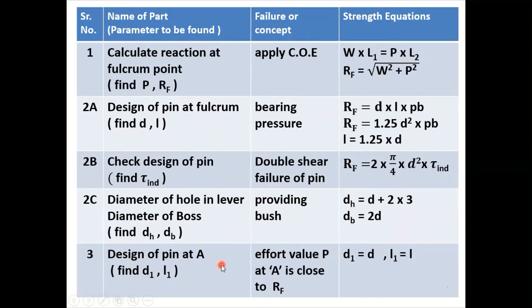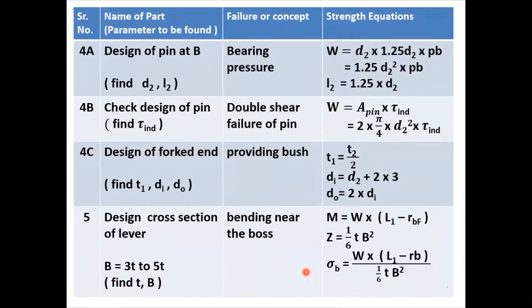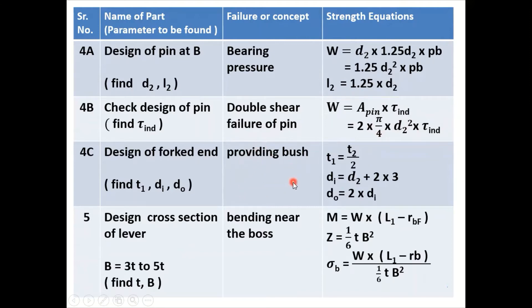Step 3 is design of pin at effort point. If the value of P is close to Rf, then the same pin dimensions will be used. Step 4 is similar to step 2 but for the pin at the load point. The load point value is W, so use the bearing pressure equation to find d2 and L2, then check the pin for double shear failure, and find the dimensions of the forged end of the lever.